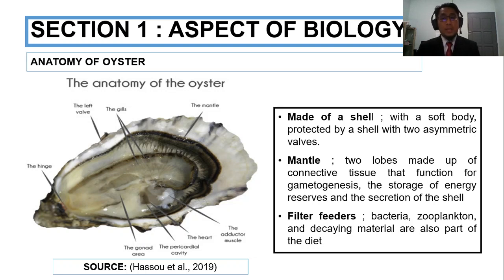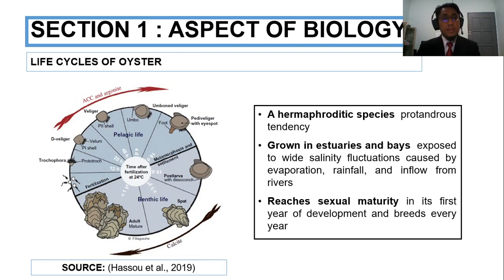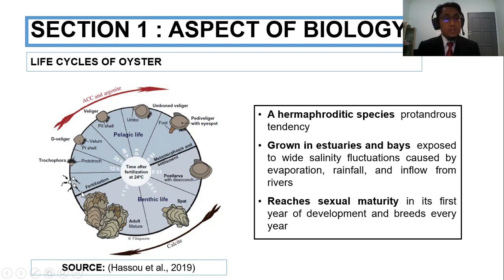This is the life cycle of the oyster. The oyster life cycle is divided into two phases: the pelagic life and the benthic life. During the pelagic life, the small trochophore larvae swim freely in the sea for around 20 days. After that, they become benthic and attach to a substrate to grow.